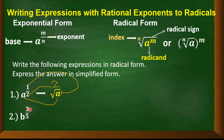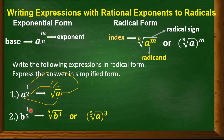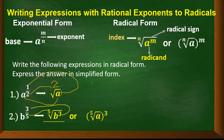Next: b to the power of 3 over 5. So b is inside the radical sign, 5 becomes the index, and 3 is the exponent of b. This can also be written as the quantity of the fifth root of b, cubed. They are just the same.